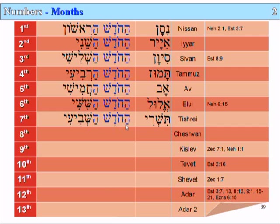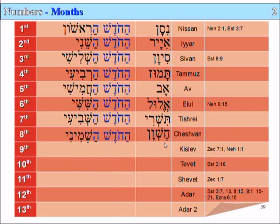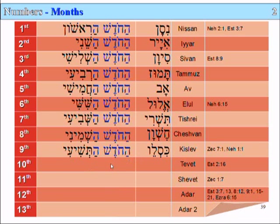We also have the Feast of Yom Kippur, the Day of Atonement, and Sukkot, or Tabernacles. The eighth month is HaKhodesh HaShemini, or in the Babylonian term, Kheshvan. The ninth month is Kislev in the Babylonian, and Ha-Khodesh HaTishi'i in Hebrew.